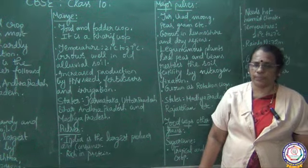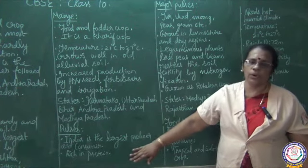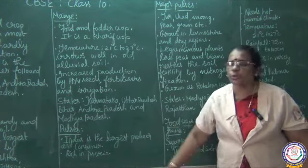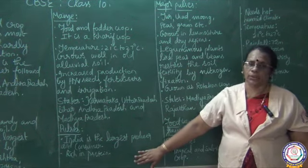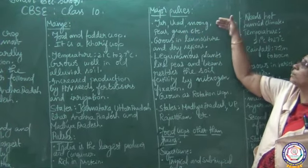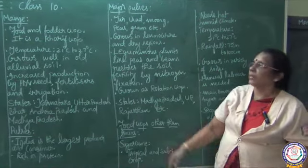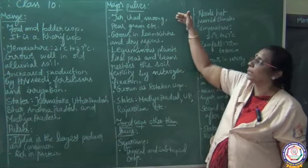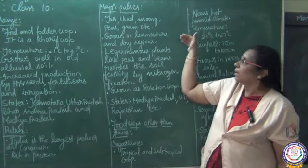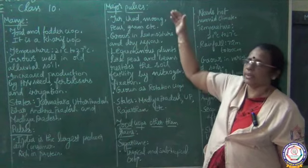Now we are going to talk about pulses. India is the largest producer and consumer of pulses. Pulses are rich in protein content. Important pulses grown in our country include tur dal, urad dal, moong dal, peas, grams, etc. Pulses grow well in less moisture and dry regions.